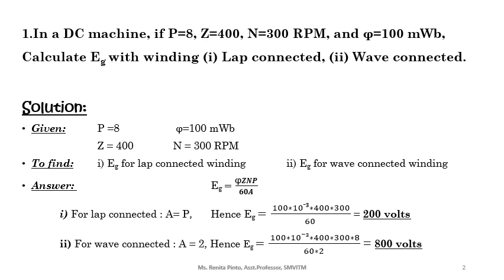As I have already told you before, while solving transformer problems, the first thing we have to do is write what data is given. They have given: number of poles P = 8, total number of conductors Z = 400, speed N = 300 RPM, flux Phi = 100 mW. You need to calculate the generated EMF for lap connected and wave connected winding.